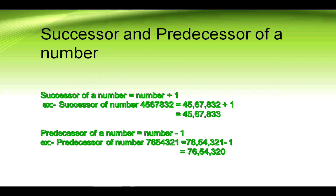The predecessor of a number equals the number minus one. To find the predecessor, we subtract one from the number. Example: the predecessor of 76,54,321 equals 76,54,321 minus one, which equals 76,54,320.